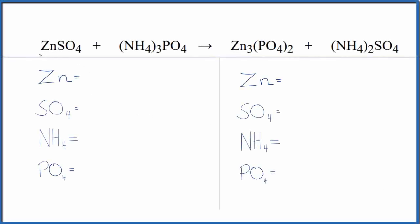In this video we'll balance the equation for zinc sulfate plus ammonium phosphate. We'll use a bit of a trick to make this easier. So let's count the atoms up and balance the equation. We have one zinc.